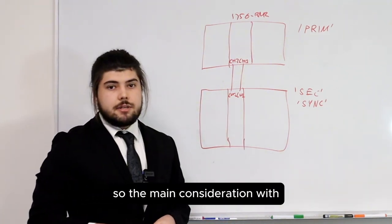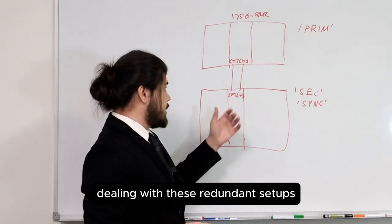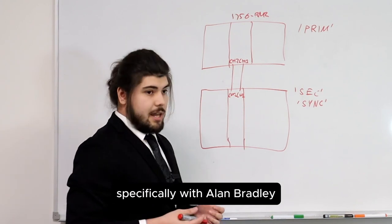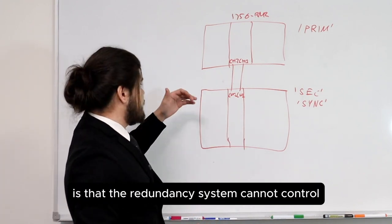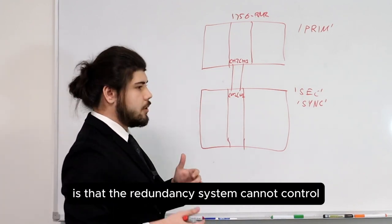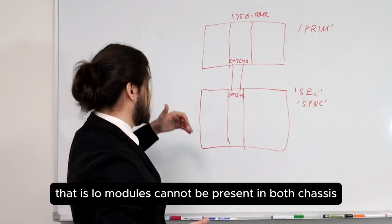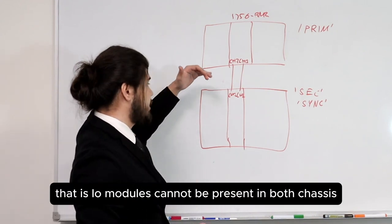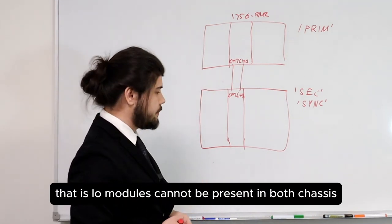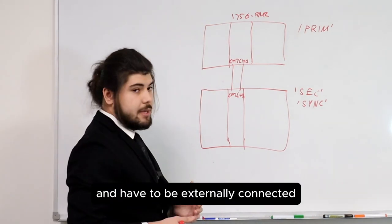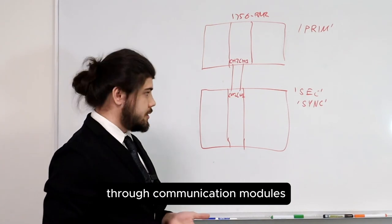The main consideration with these redundant setups, specifically with Allen Bradley, is that the redundancy system cannot control remote IO directly. IO modules cannot be present in both chassis and they have to be externally connected through communication modules.